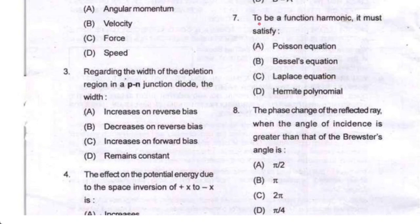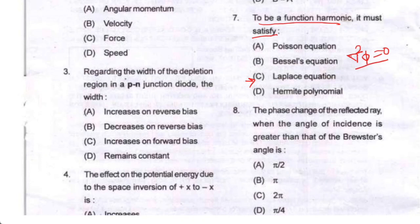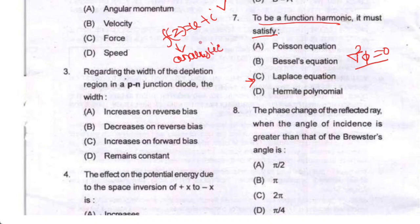Question number seven: for a function to be harmonic, it must satisfy Laplace's equation. So option C is your correct option. The Laplace equation is ∇²φ = 0. Any function satisfying Laplace's equation is a harmonic function. For a complex function f(z) = u + iv that is analytic, the real and imaginary parts u and v must each satisfy the Laplace equation and are harmonic functions.